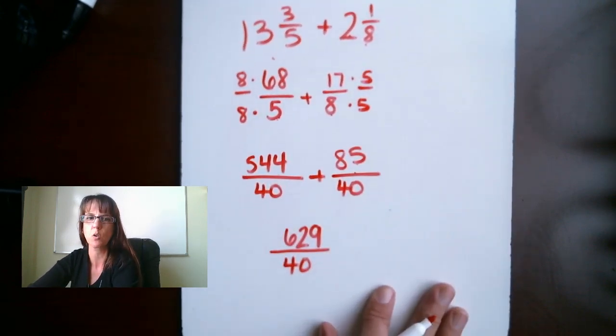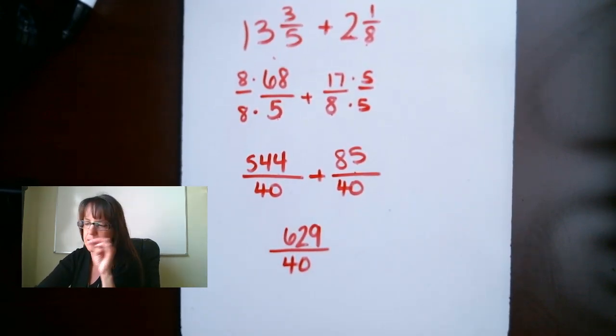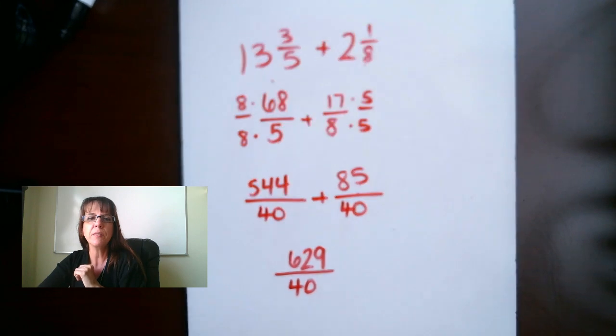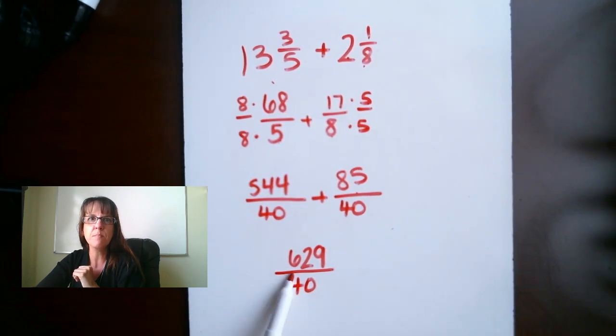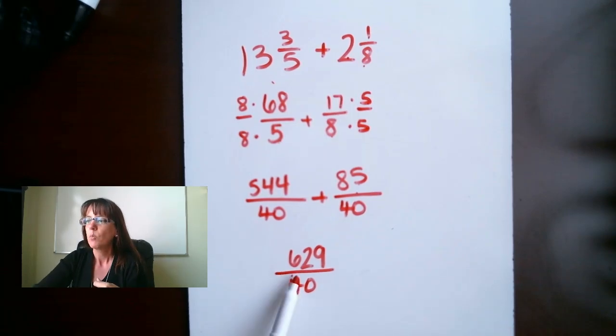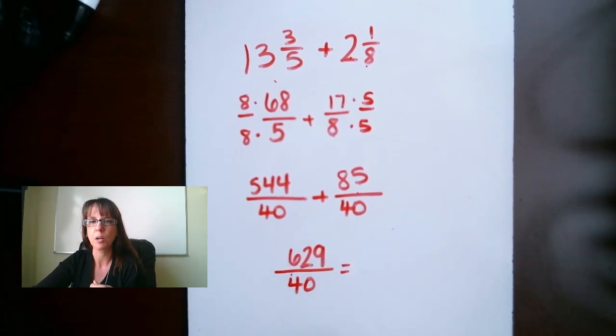So, now we have this crazy, I'm so sorry, you guys, didn't realize that that was out of the frame. So now we have this crazy improper fraction, where the top, the numerator is larger than the bottom. We have to turn this into a mixed number.